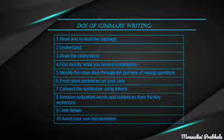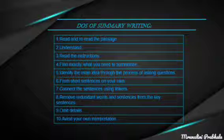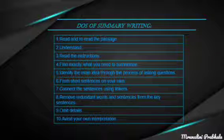The next thing we shall see is the dos of summary writing. The first one is: read and reread the passage. Before starting summary writing, read the passage given for summarizing. Within one reading you may not understand the central idea of the passage, so reread it. After reading, try to understand the passage. While reading, you can also underline the main points with a pencil for better understanding.